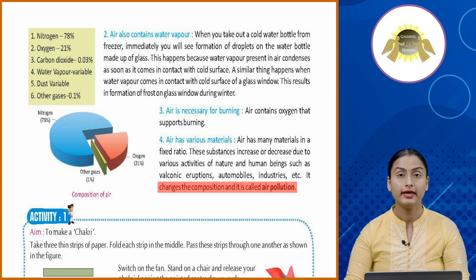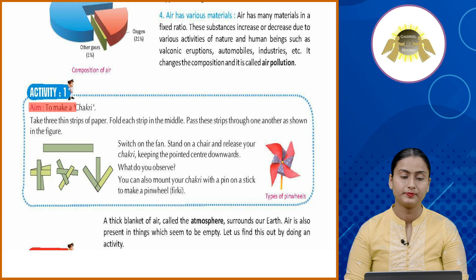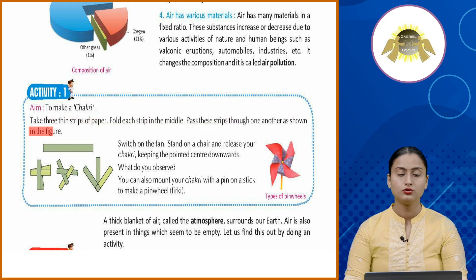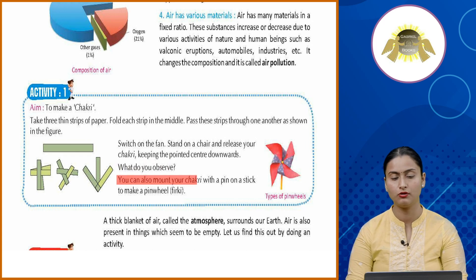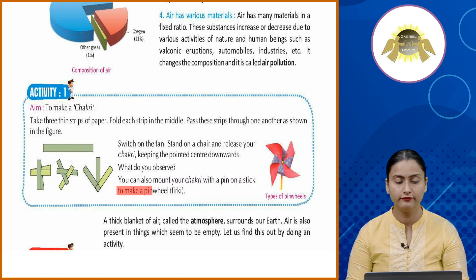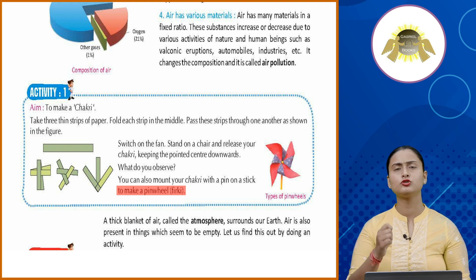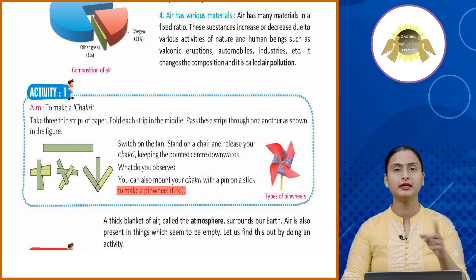Activity 1 — aim: to make a chakri. Take three thin strips of paper, fold each strip in the middle, and pass them through one another. Switch on the fan, stand on a chair, and release your chakri with the pointed center downwards. Observe what happens. You can also mount the chakri with a pin on a stick to make a pinwheel. When placed under the fan, it will move, showing that air is present.